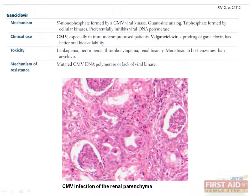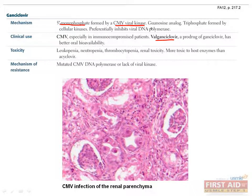Ganciclovir is another guanosine analog that preferentially inhibits viral DNA polymerase, typically used in the treatment of CMV in immunocompromised patients. Valganciclovir, a pro-drug of ganciclovir, has better oral availability. Ganciclovir is converted to 5-monophosphate through activation by CMV viral kinase or HSV-VZV thymidine kinase. This drug is more toxic than acyclovir, causing leukopenia, neutropenia, thrombocytopenia, and renal toxicity.